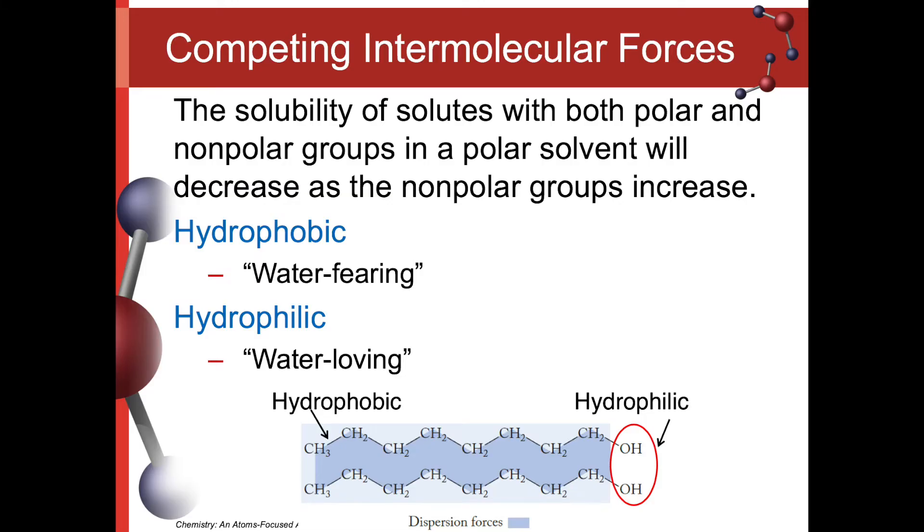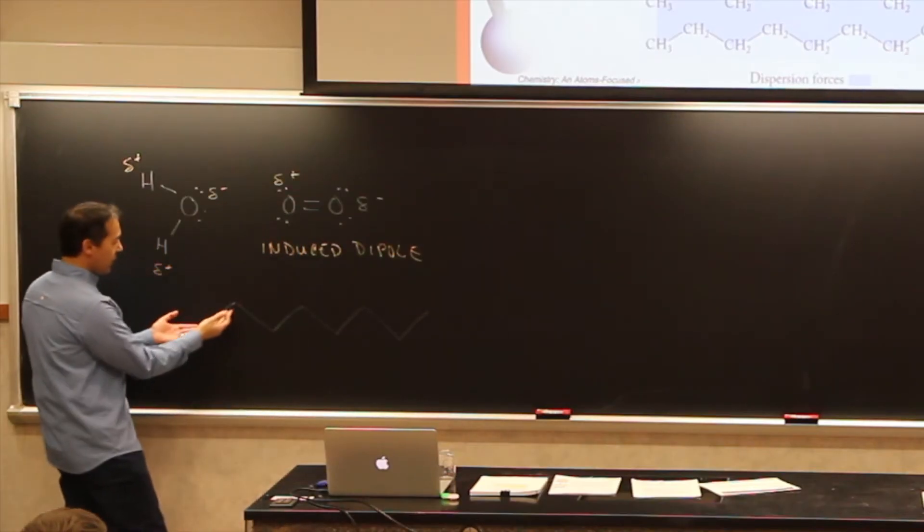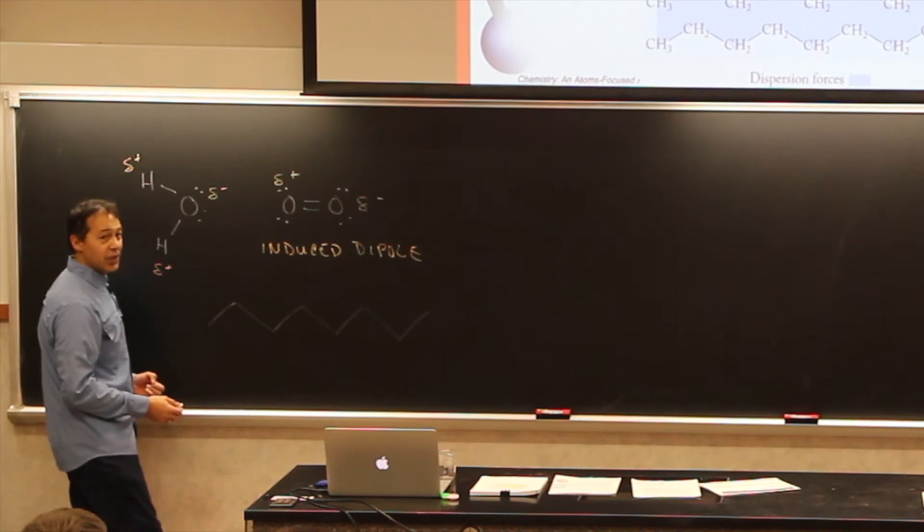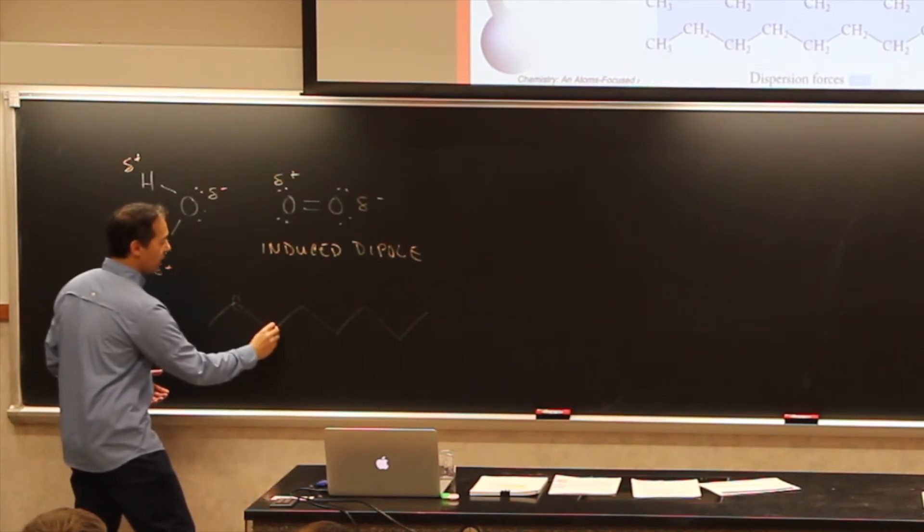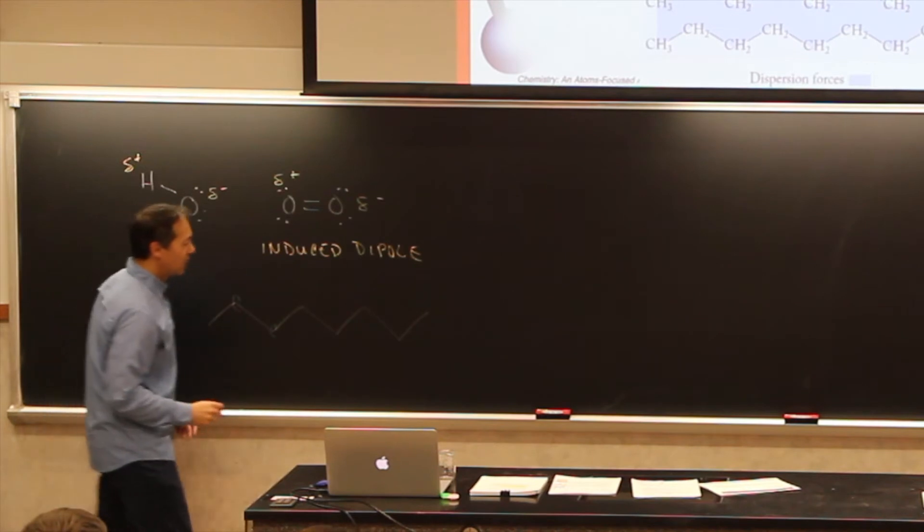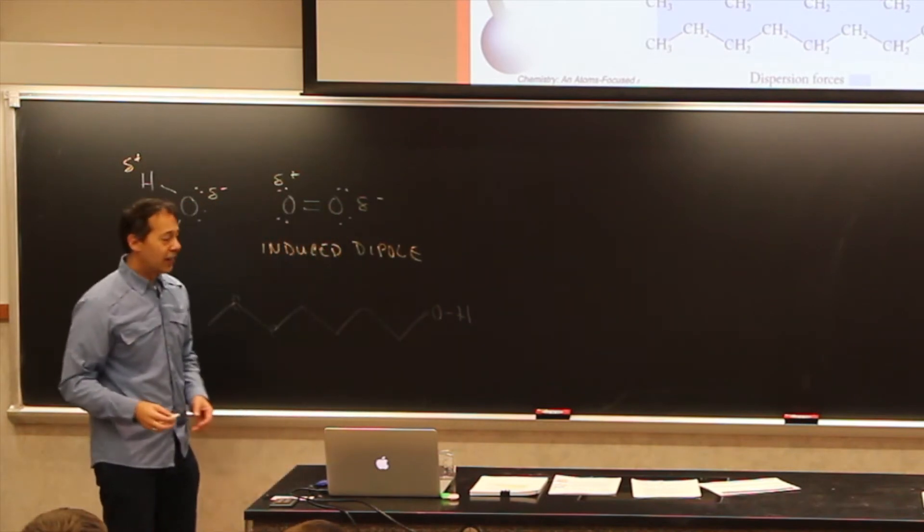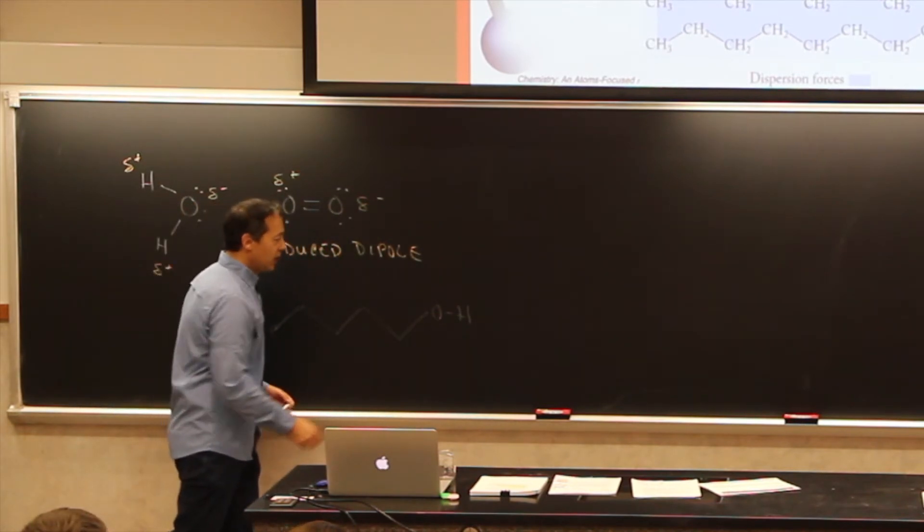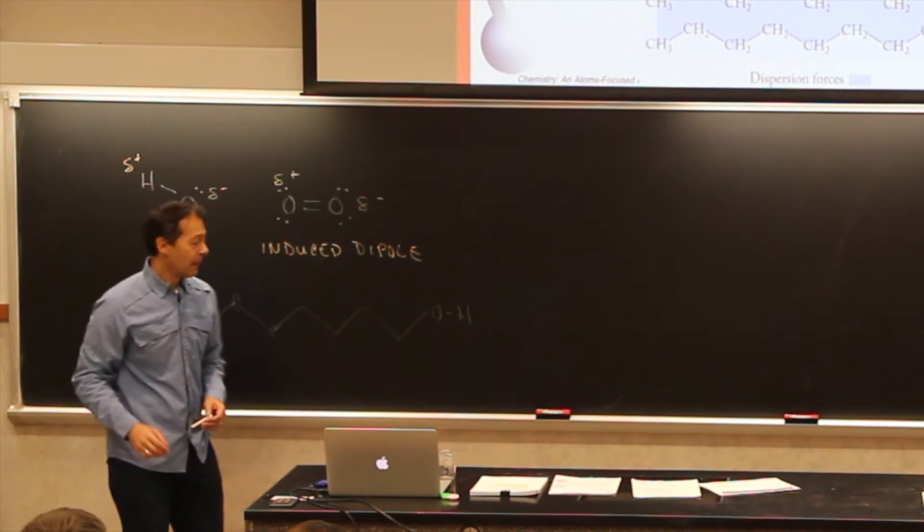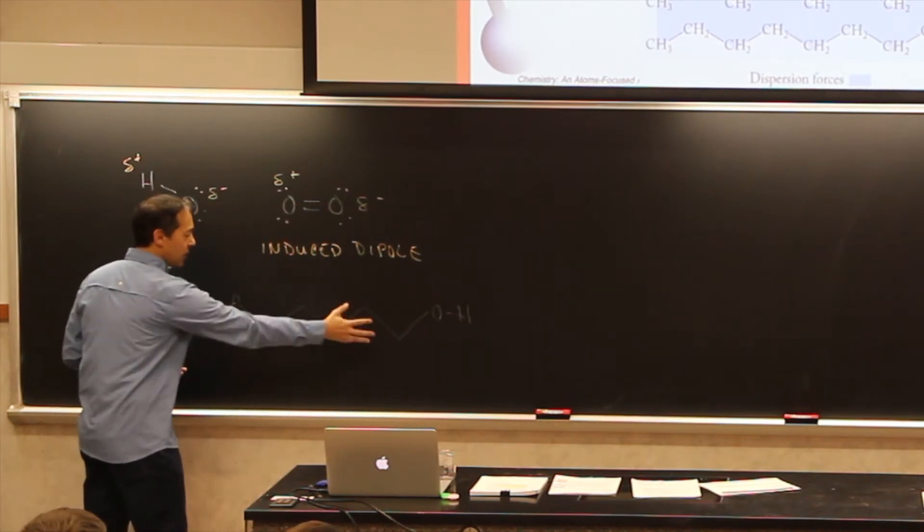These words mean water-fearing and water-loving, and sometimes we have molecules that are both. For example, if we have this long zig-zaggy type molecule, I'm going to go like this. Where we have each of these corners would be a carbon atom. This is how organic chemists draw long chains of carbon atoms. They just do zig-zaggy lines with the idea that there would be a carbon at each one of these. Organic chemistry shorthand. And at the end here, I'm going to put an OH like this.